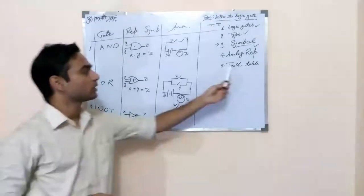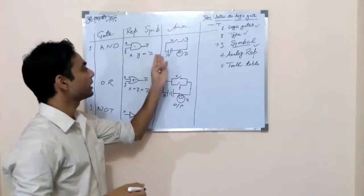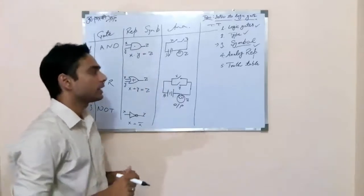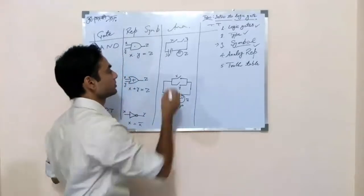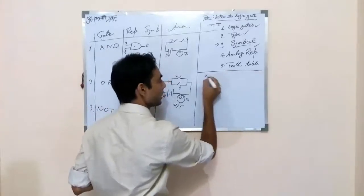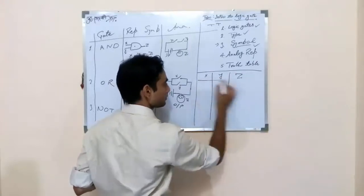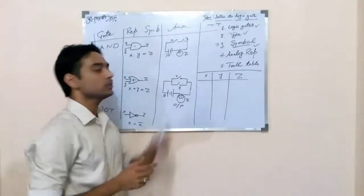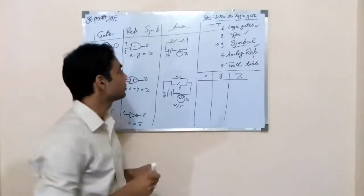Now how can we draw the truth table of particular gates? So in this table there are two input symbols and one output symbol. So in truth table there are four possible conditions. We draw the truth table here. X Y and Z. We know it only takes input boolean values.